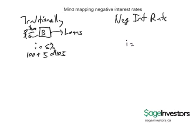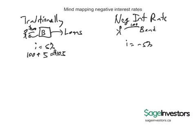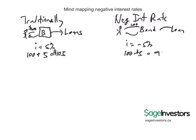if I took interest rates at minus 5% and I went in and deposited $100 to my bank, they would do the same thing — they would loan it out — and then ultimately when they returned it to me, they would give me $100 back,